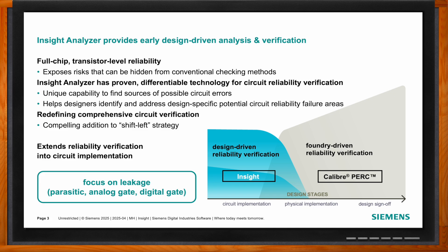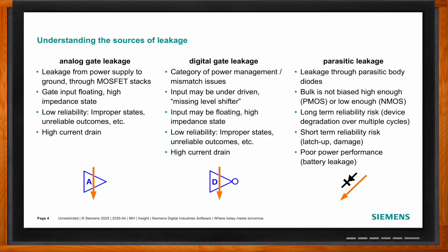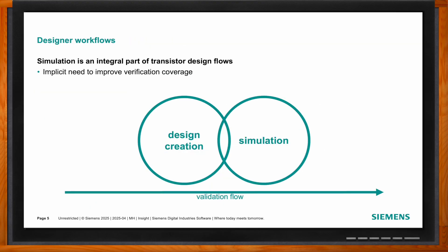Insight Analyzer has a broad set of capabilities, but the focus is on understanding tricky sources of leakage that can't easily be found by other tools or methods. These include things like conditional floating nodes, leakage through parasitic body diodes and MOSFETs. Insight uses a dynamic state-based approach to find the specific set of conditions that cause these issues — looking at analog gate leakage, digital gate leakage, and parasitic leakage.